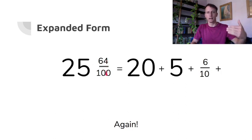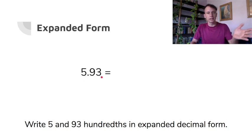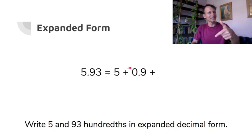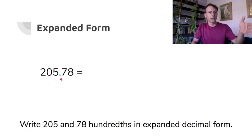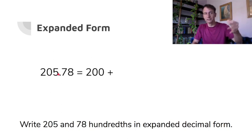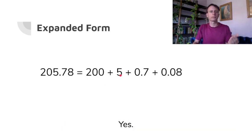The six — its value is 60 hundredths, but simplified that's six tenths. And the four — its value is four hundredths. Now this one, same thing but with decimals. The five's value is five. The nine is in the tenths place so its value is nine tenths — isn't that easier in decimal form? And the three is in the hundredths place so its value is three hundredths. Bigger number — not scary. The two is 200, the five is five, the seven is in the tenths place so its value is seven tenths, the eight is in the hundredths place so its value is eight hundredths.